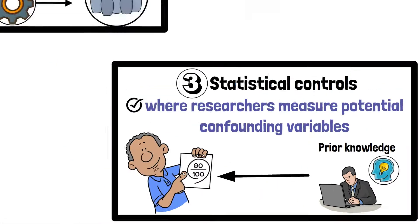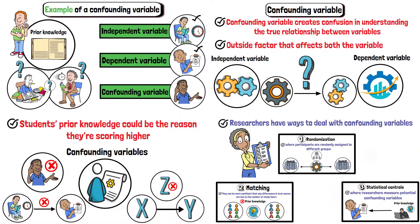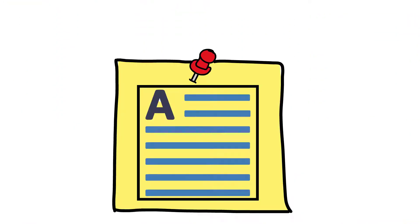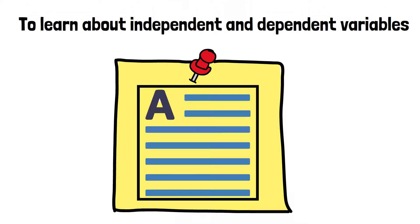If you need to write about confounding variables for school or university, I recommend reading my full article that you can find in the pinned comment. To learn about independent and dependent variables, watch this video next.